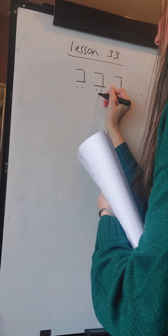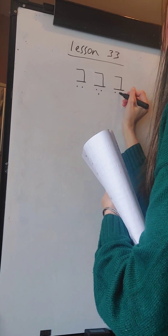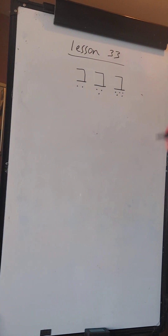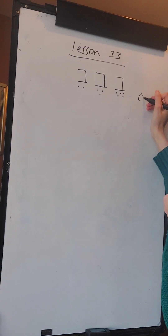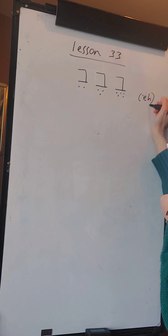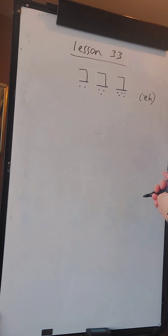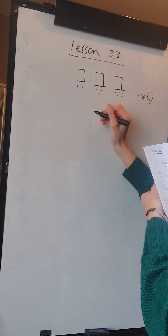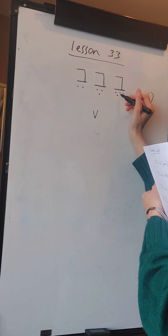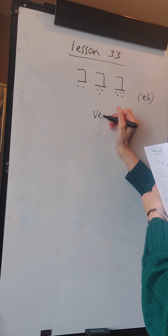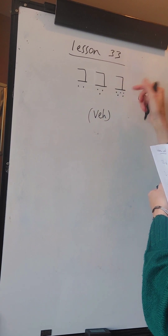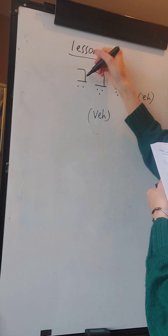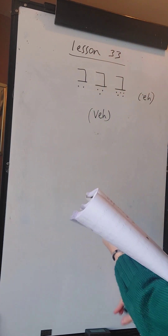Any of these three symbols all represent the E vowel, which sounds as ER. So again, exactly the same rule - consonant Vet, sound of the vowel E - they'd each read as VER, VER, and VER.